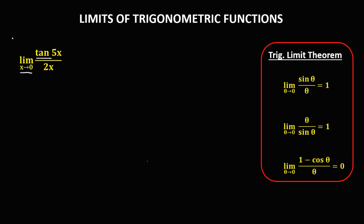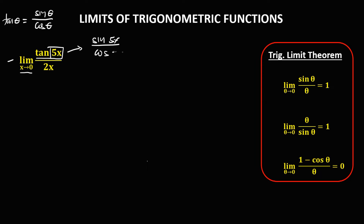Since tangent(θ) is equal to sine(θ) over cosine(θ), and in this problem θ is equal to 5x, therefore tangent(5x) is equal to sine(5x) over cosine(5x). So we now have the limit as x approaches 0 of sine(5x) over cosine(5x), all over 2x.